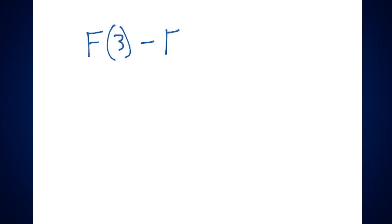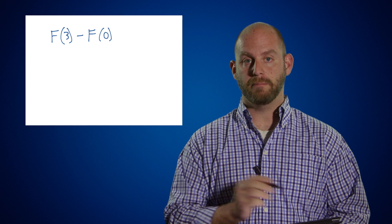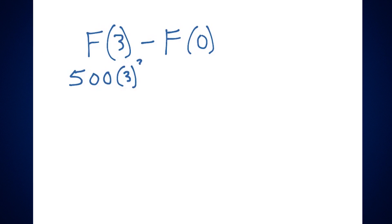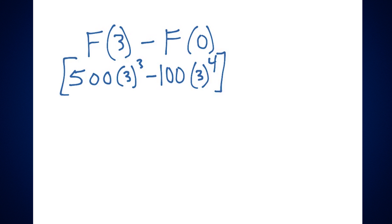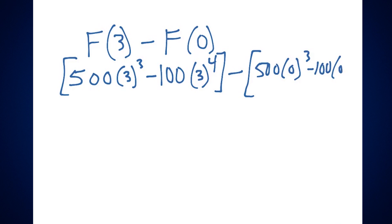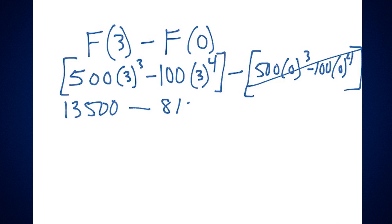Relating this back to Part Two of the Fundamental Theorem of Calculus — integrating from zero to three — we evaluate capital F of three minus capital F of zero. Substituting in: 500 times 3 cubed minus 100 times 3 to the fourth, minus the quantity 500 times 0 cubed minus 100 times 0 to the fourth. That second quantity is all zero, leaving us with 13,500 minus 8,100, giving a grand total of 5,400.